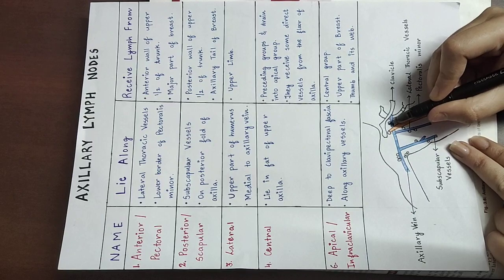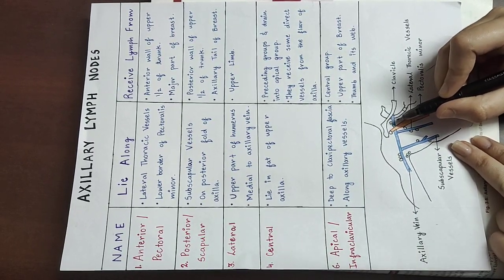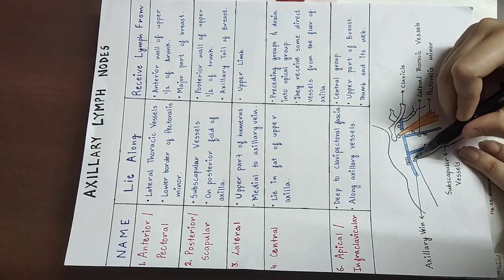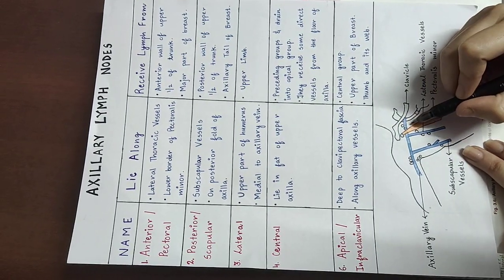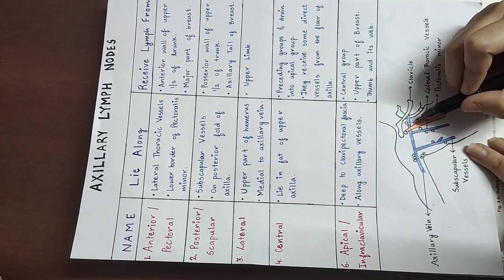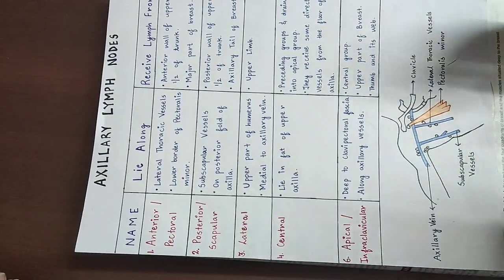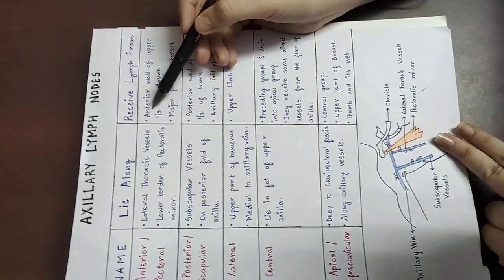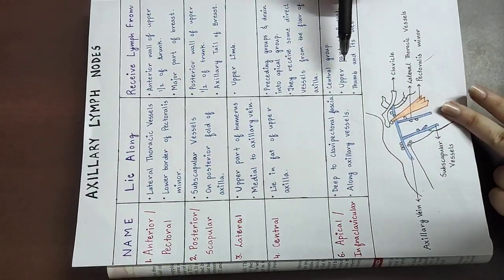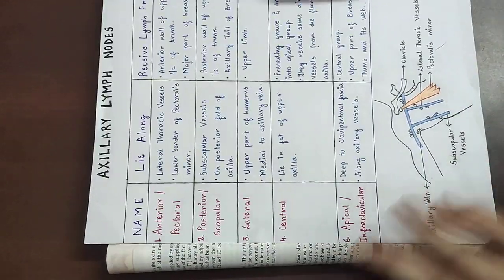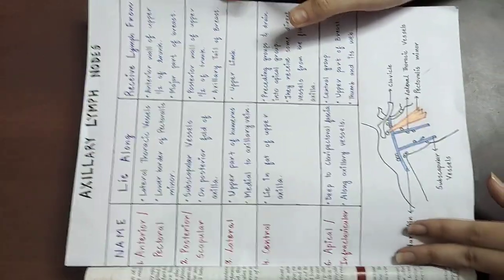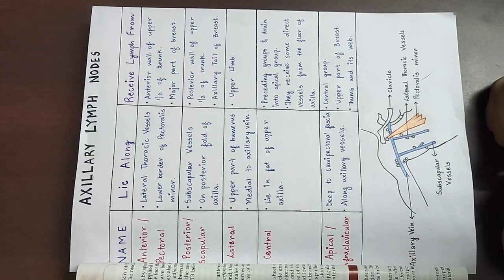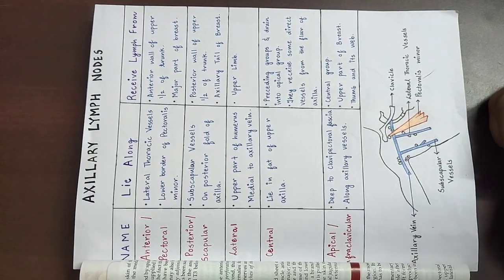They receive lymph from the central group, the upper part of the breast, and also the thumb and its web space. In total, looking at the breast, lymph is collected by the anterior, posterior, and apical lymph nodes. That covers the axillary lymph nodes — if you understood, let me know in the comment section. Thanks for watching!